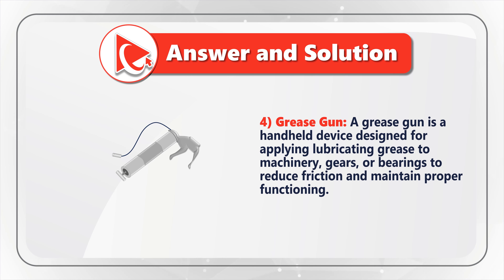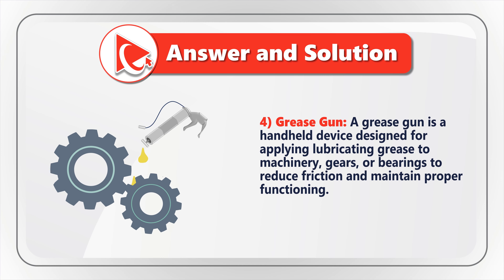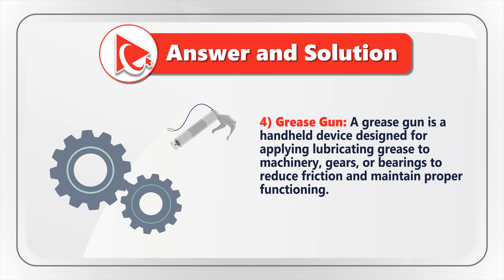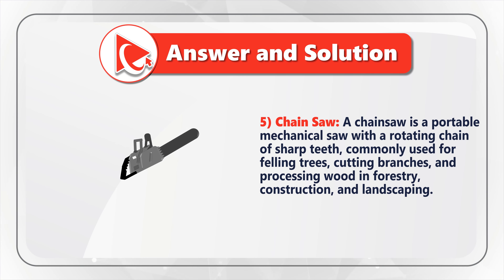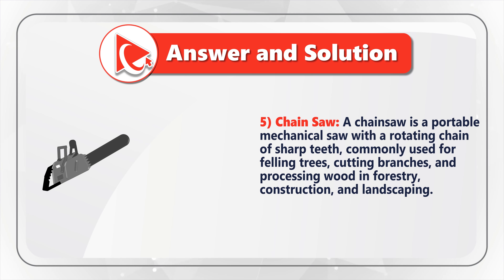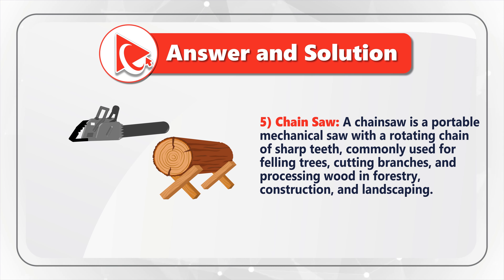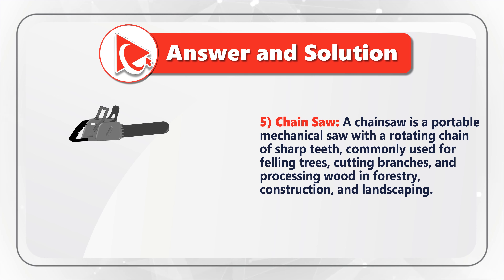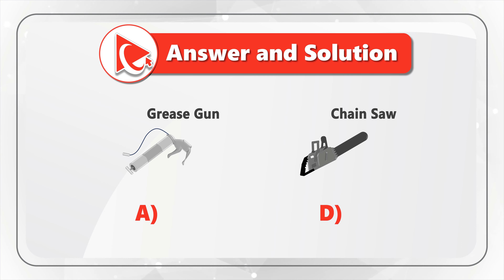Choice four is a grease gun. A grease gun is a handheld device designed for applying lubricating grease to machinery, gears, or bearings to reduce friction and maintain proper functioning. And last, description five resembles a chainsaw. A chainsaw is a portable mechanical saw with a rotating chain of sharp teeth, commonly used for felling trees, cutting branches, and processing wood in forestry, construction, or landscaping. The grease gun matches image A and the chainsaw matches image D.